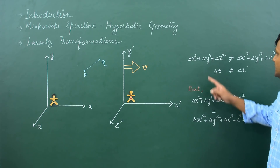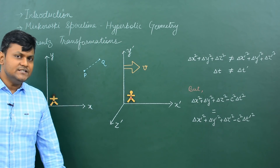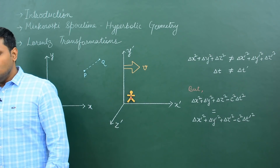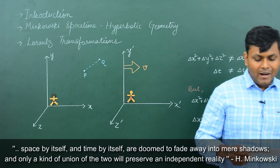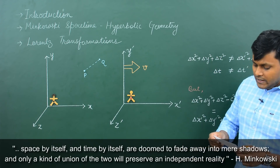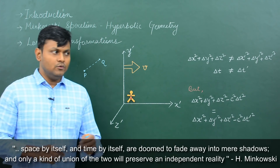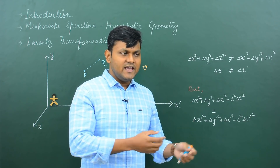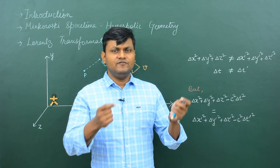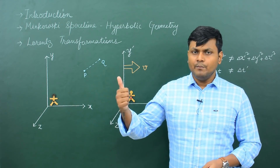One thing becomes very clear from this discussion: space and time are not absolute anymore. They are dependent on one another to describe the physical reality of physical events. I'd like to read a line given by Hermann Minkowski almost 110 years back. He said: 'Space by itself and time by itself are doomed to fade away into mere shadows, and only a kind of union of the two will preserve an independent reality.' Those days are gone where we looked at physical events only in the spatial dimension with time as a separate parameter.